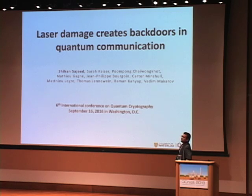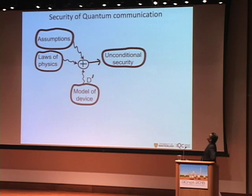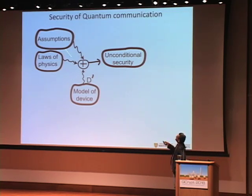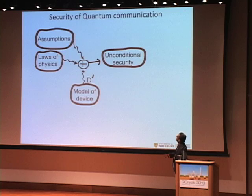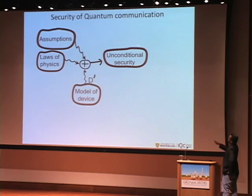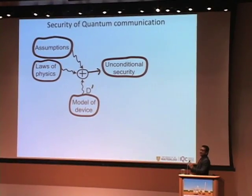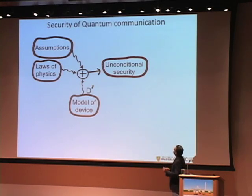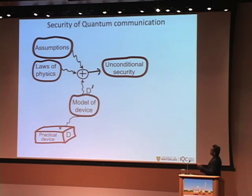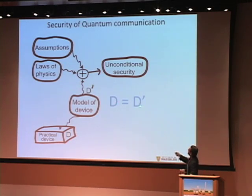This talk is mainly about the security of quantum communication. Unconditional security is based on three things: we make some assumptions, we use the laws of physics, and we make a model of our devices. If our modeling is correct, we mix them together and arrive at unconditional security. This is done in theory. Then we move on to implementing the device — we use a practical device with property D and implement our system, trying our best to make sure that D equals D-prime, meaning there is no gap between our theory and our actual implementation.